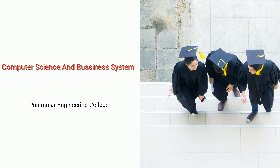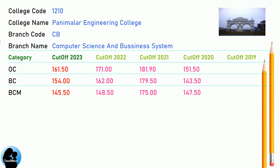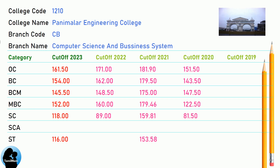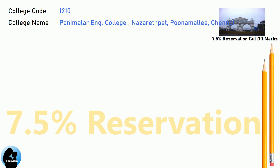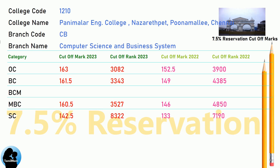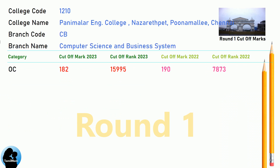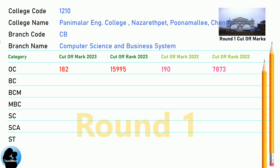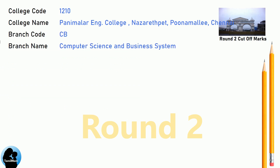DNA Cut-off for Panimalar Engineering College in Computer Science and Business Systems. DNA 7.5 Reservation Cut-off for Panimalar Engineering College in Computer Science and Business Systems. DNA Round 1 Cut-off for Panimalar Engineering College in Computer Science and Business Systems. DNA Round 2 Cut-off for Panimalar Engineering College in Computer Science and Business Systems.